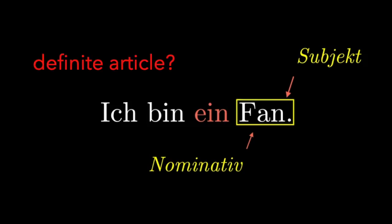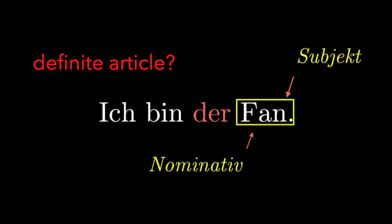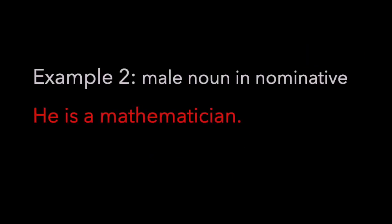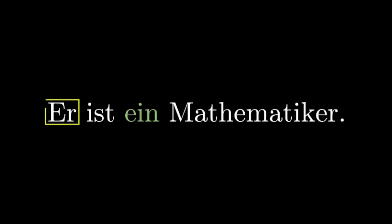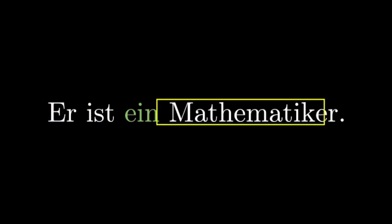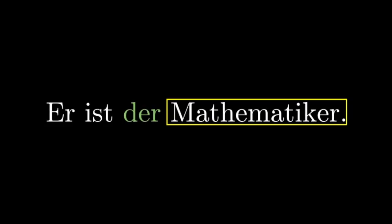What is the definite article? If you want to say 'I am the Fan,' that is 'Ich bin der Fan.' Okay, example two of a Nominativ case — how do you say 'he is a mathematician'? You can pause the video. The solution is: er ist ein Mathematiker. So Mathematiker is the subject of the sentence, so the indefinite article is ein. And the definite article is der — remember, it's a male noun.